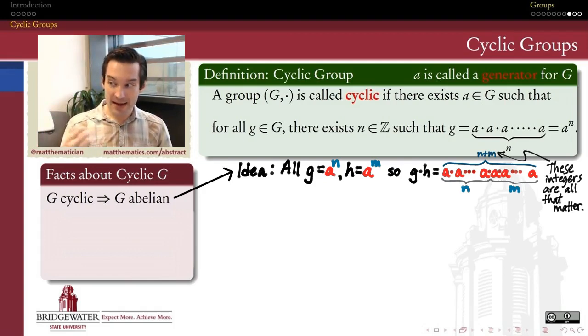So that's the first fact - any time we're dealing with cyclic groups, we know we can take the commutative property for granted. Every cyclic group is abelian. The converse is not necessarily true. There exist examples of abelian groups that are not cyclic. We've already seen one or two this semester.